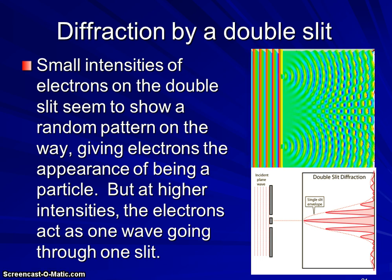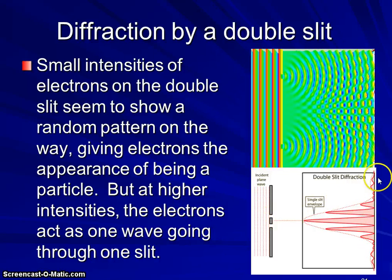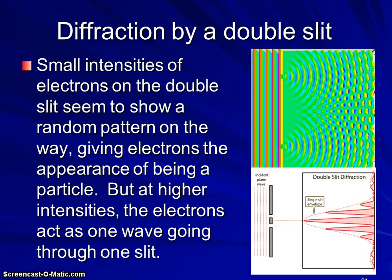Now, if we do our diffraction experiment through a double slit, at low intensities of electrons, we'll see what looks like a random pattern of them landing as they come through and hit the slit in the back. So at low intensities, it appears that the electrons, in other words, less electrons per minute coming through the slits, it appears that the electrons are behaving like particles.